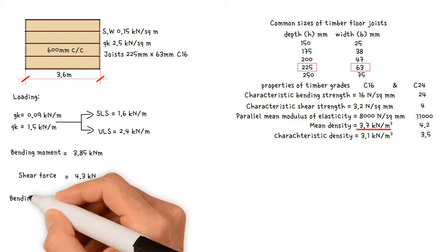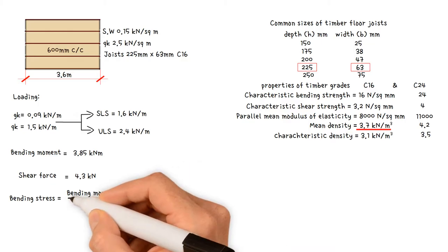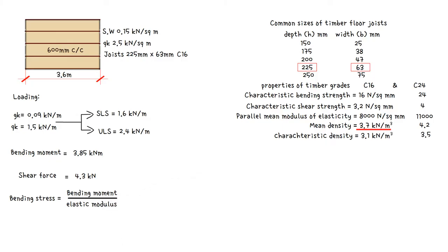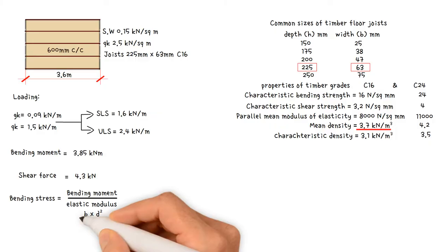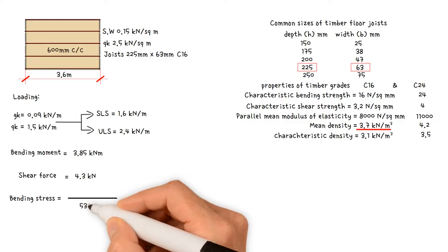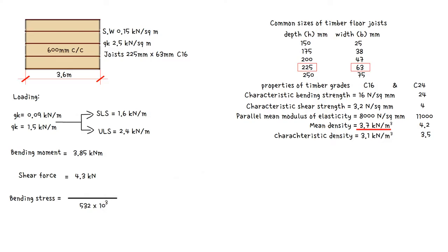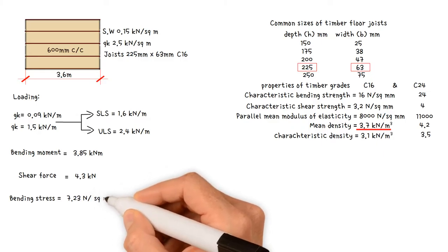The applied bending stress equals the design bending moment divided by the elastic modulus of the joist, which is calculated as the width times the depth of the section squared, divided by 6, giving us a value of 532 × 10³ mm³. To convert kilonewton meters to newton millimeters, the bending stress equals the design bending moment 3.85 × 10⁶, divided by the elastic modulus 532 × 10³. This results in a value of 7.23 newtons per square millimeter.